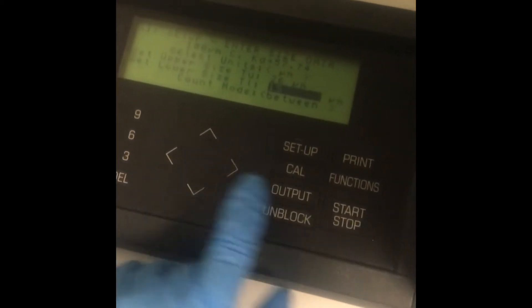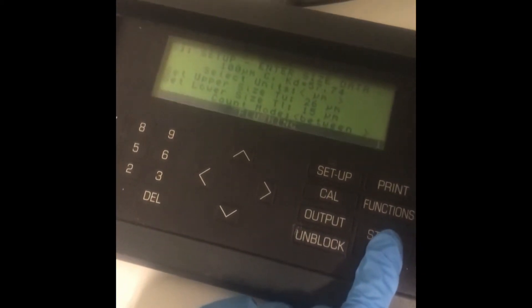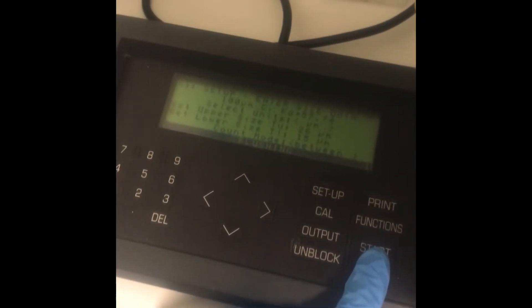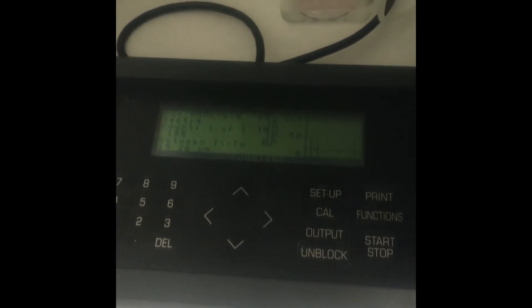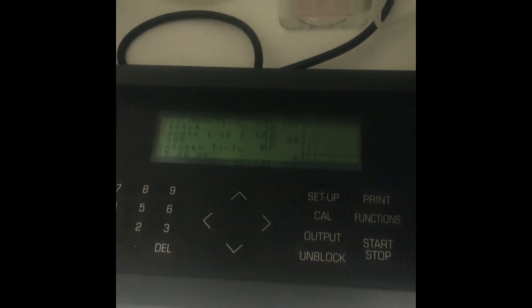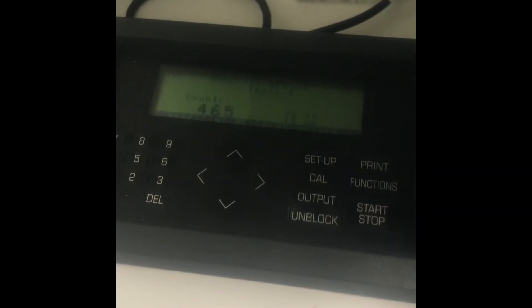This machine, the cell counter, counts the cells in 500 ml of the cell suspension mixture which is mixed with isotonic solution. So to know the number of cells in one ml, I'm gonna count twice and add them together.